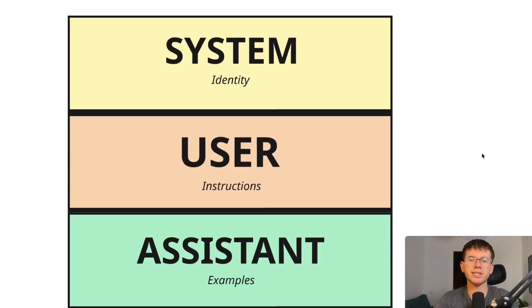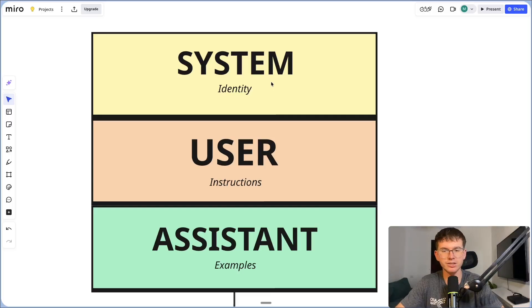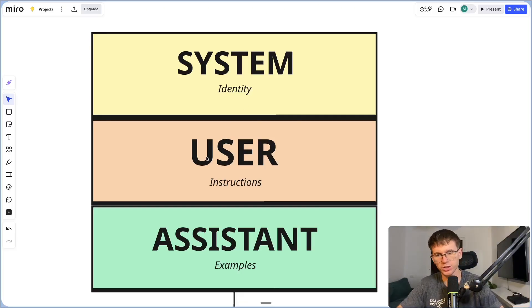Every prompt is actually divided into three different parts. The first one is a system prompt, which is giving AI an identity. The second one is a user prompt, which is giving AI instructions. And finally, we have an assistant prompt, which is giving AI examples.